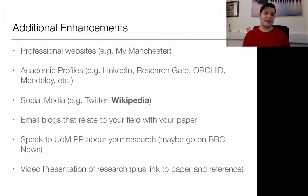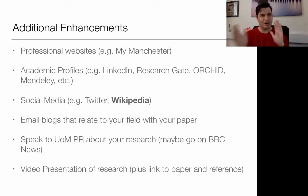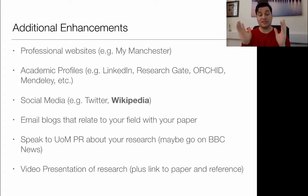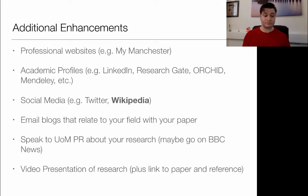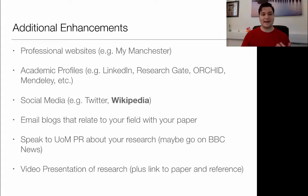The last section covers other things you can do. Once you've written your journal and added SEO throughout, you also need to signal to Google that your content is high quality. Putting your paper on your professional website — such as My Manchester — is a great option. If you have research groups, get your paper on there. Activate profiles on LinkedIn, ResearchGate, ORCID, Mendeley, and any others you can think of, and get your full text on there if possible.